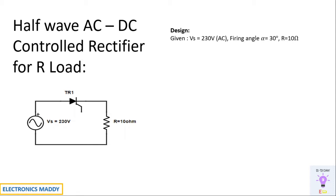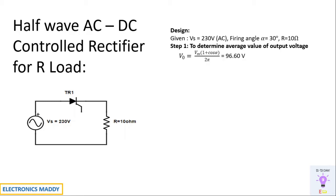Let us assume a sinusoidal supply voltage of 230V and the firing angle is assumed to be 30 degrees. And a load resistance of 10 Ohm is chosen.